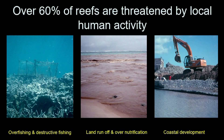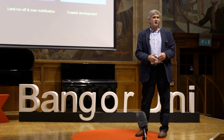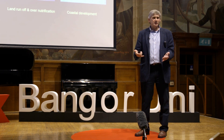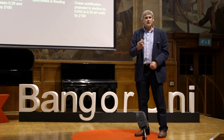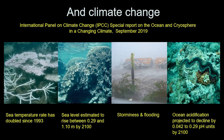Over 60% of reefs are now threatened by local human activity — overfishing, destructive fishing that breaks up the coral reef, land runoff with nutrients and fertilisers, and coastal development projects that produce sediment. Reefs rely on being in a low-nutrient environment. Climate change is now having a big effect as well. Last month, the IPCC produced a special report indicating that the rate of sea temperature change has doubled since 1993, and this is going to cause corals to bleach.